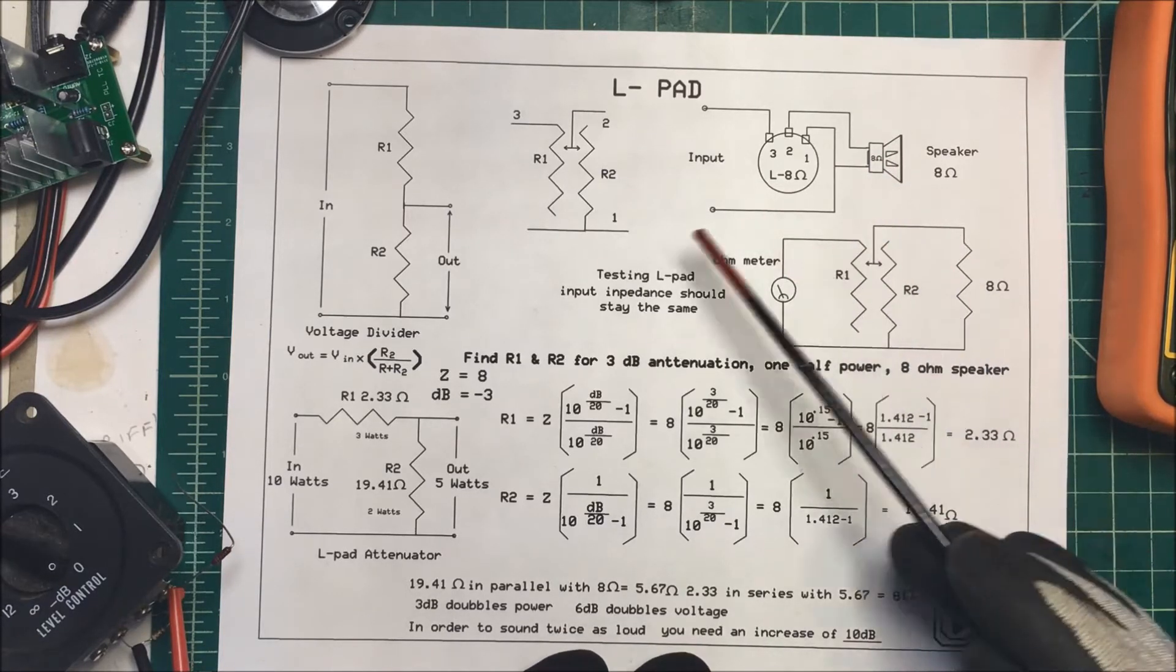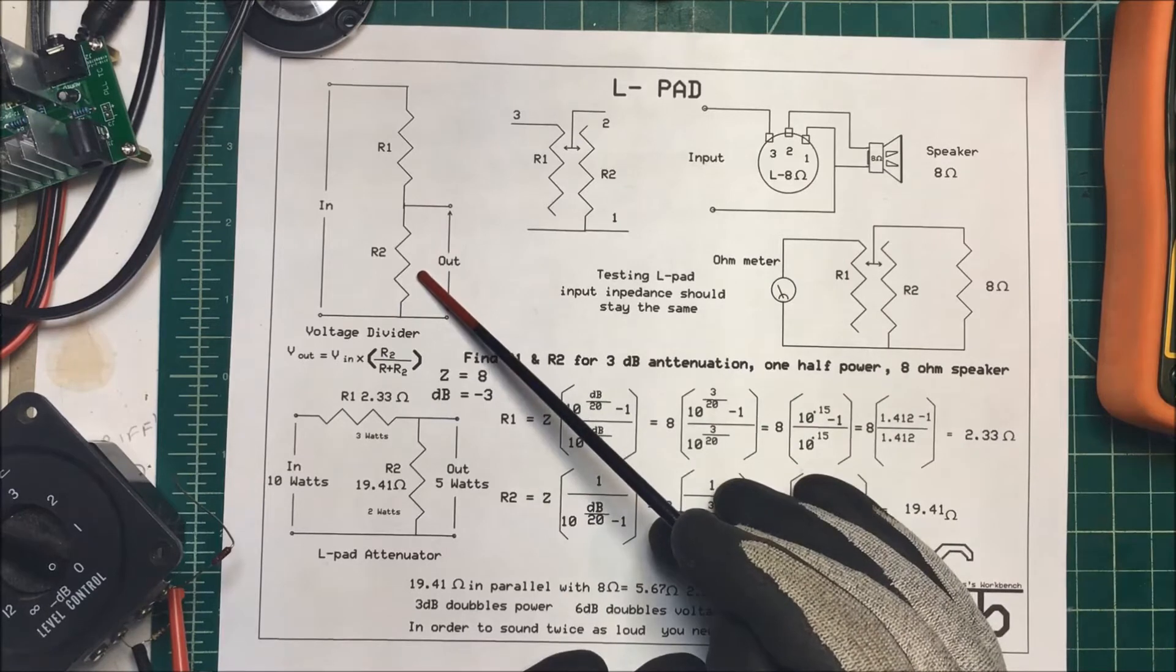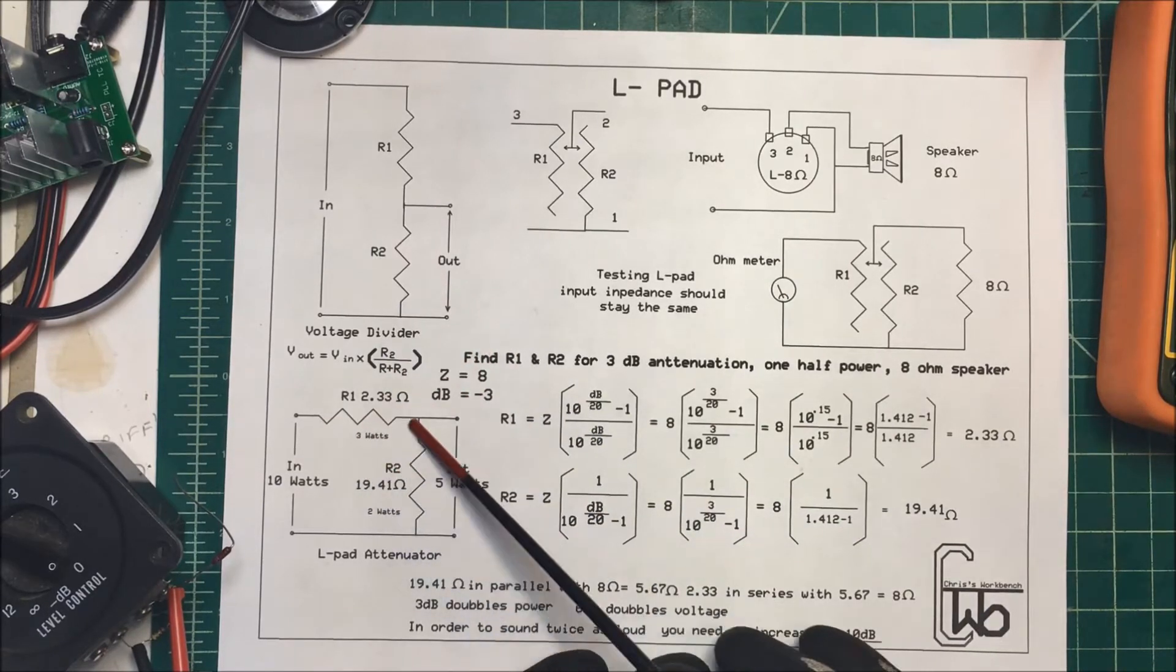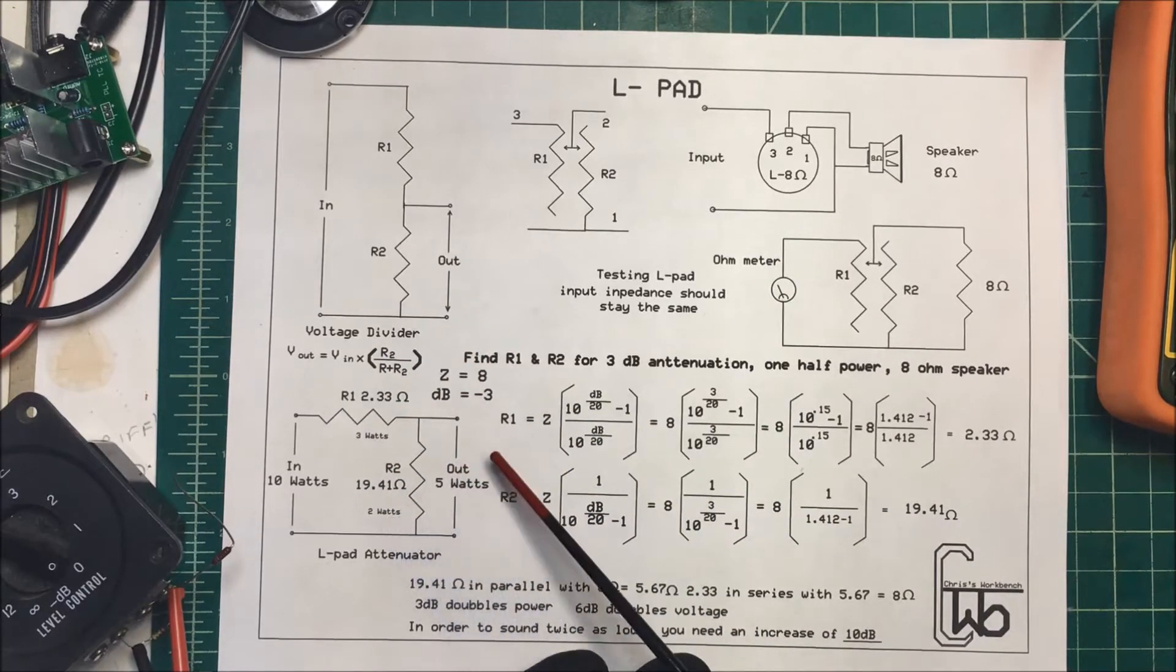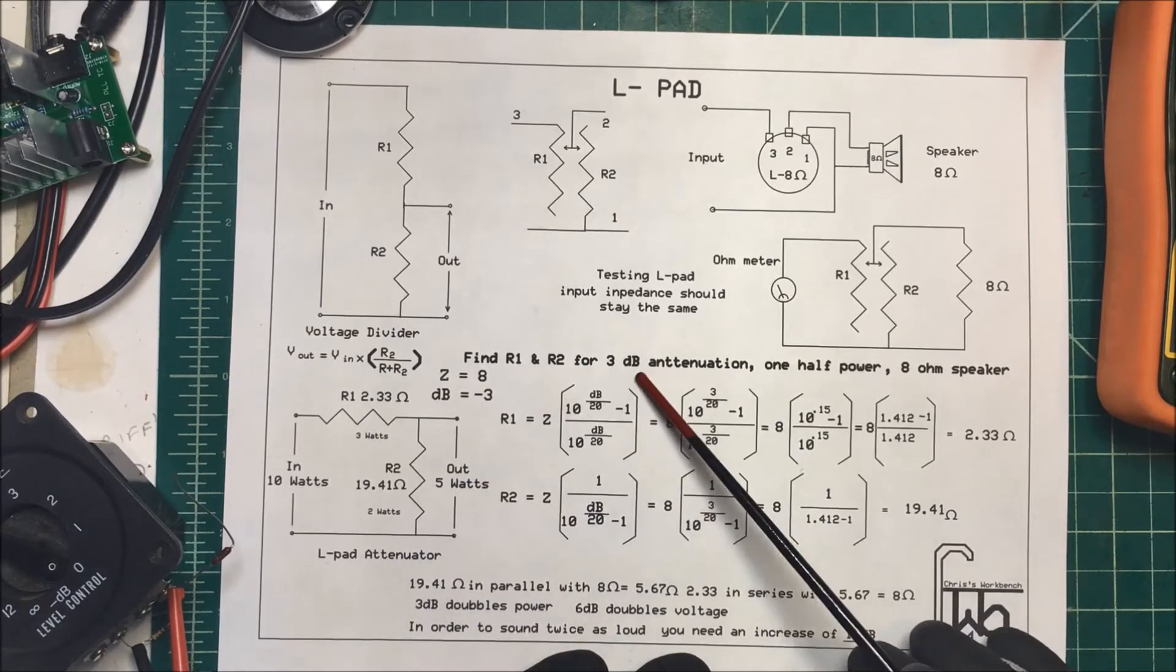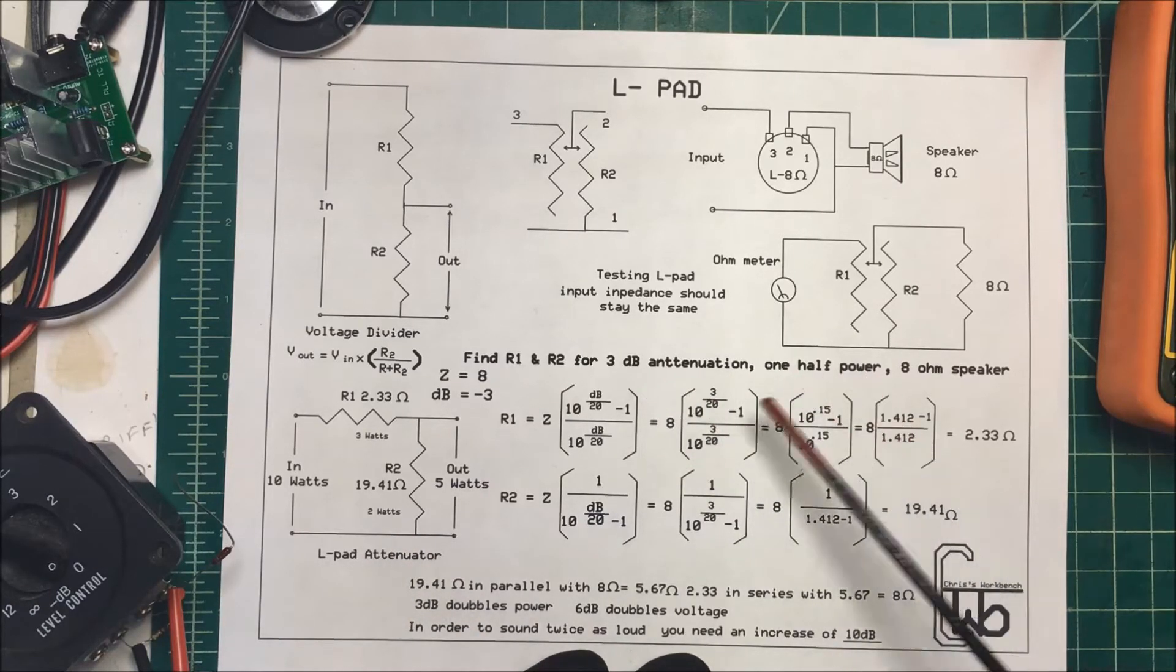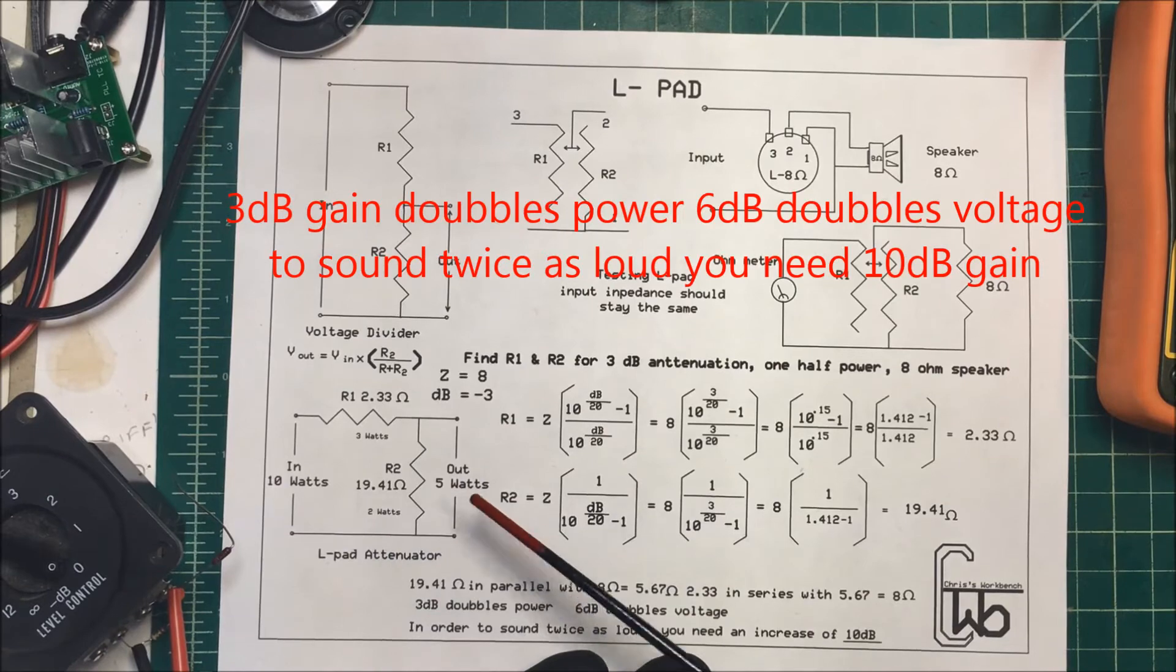In order to do that, we use a voltage divider. Now it's set up like this, and say we want to go down 3dB, half power. We got 10 watts in, we want 5 watts out.